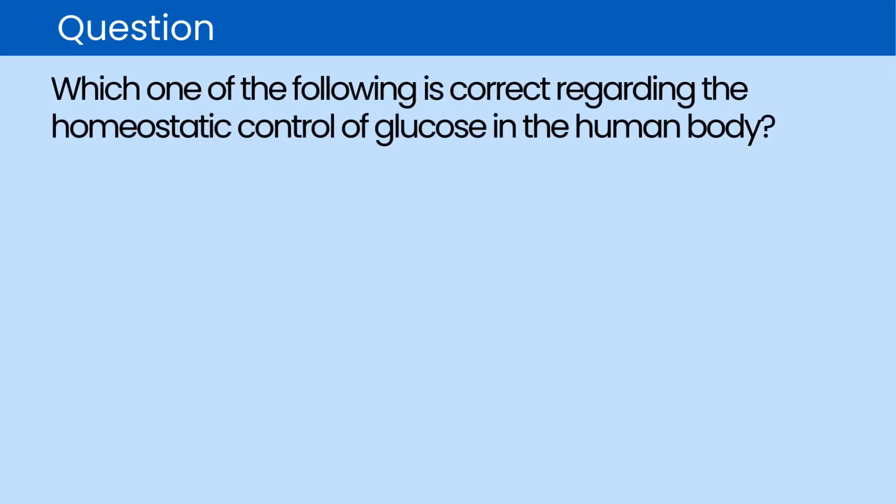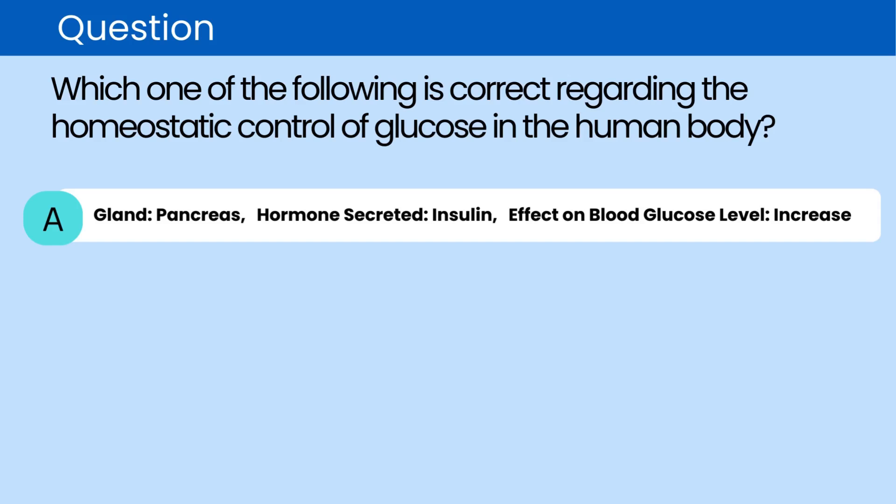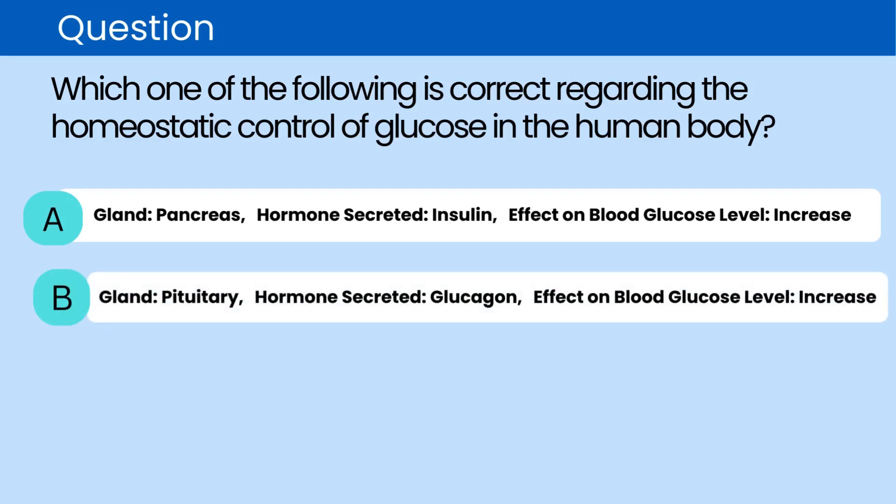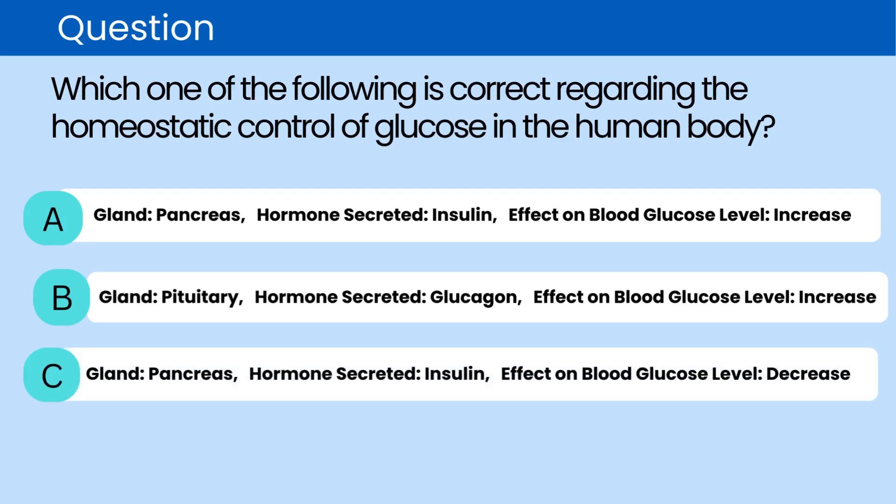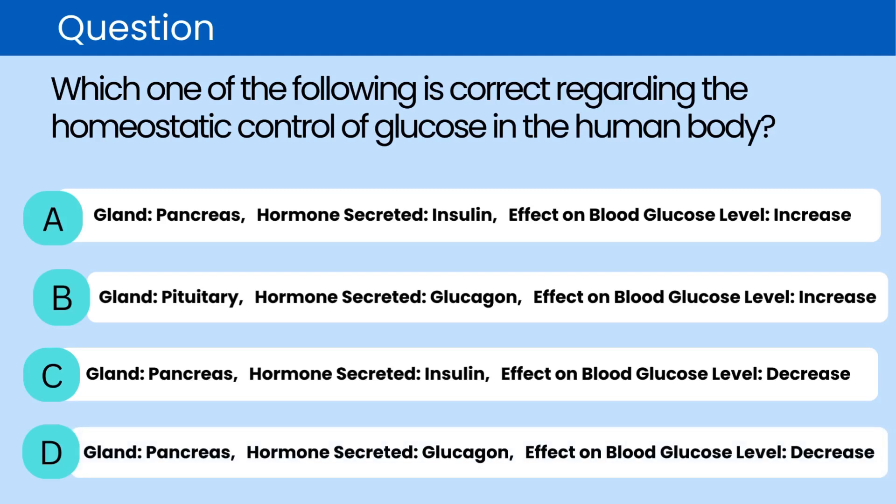Question. Which one of the following is correct regarding the homeostatic control of glucose in the human body? A. Gland: pancreas, hormone secreted: insulin, effect on blood glucose level: increase. B. Gland: pituitary, hormone secreted: glucagon, effect on blood glucose level: increase. C. Gland: pancreas, hormone secreted: insulin, effect on blood glucose level: decrease. D. Gland: pancreas, hormone secreted: glucagon, effect on blood glucose level: decrease.